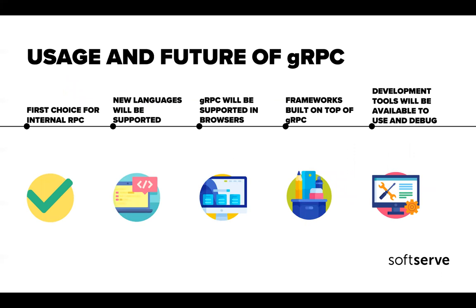What about the future of gRPC? gRPC is not that young — I believe it's three or four years old. In my opinion, in the future it will be the first choice for internal RPCs. If you're building IoT services connecting IoT devices with a server, that's great. If you want to build communication within your cloud or internally, that's also a great use case. New languages will be supported — new language bindings are created every few months, so you'll see more and more languages supported. gRPC is already supported in browsers via HTTP/2 in Google Chrome.